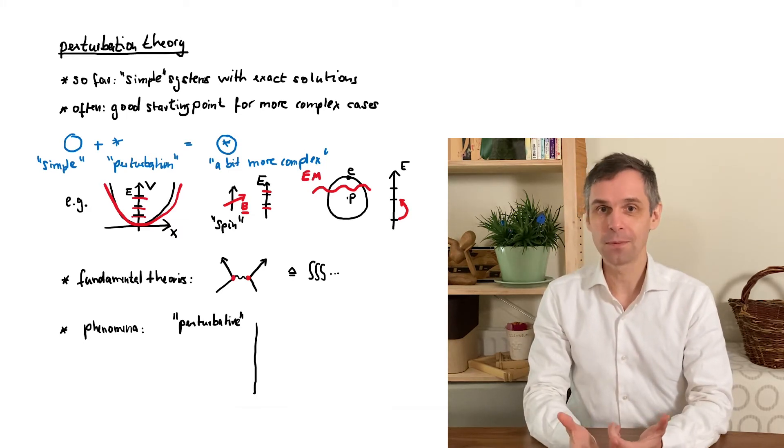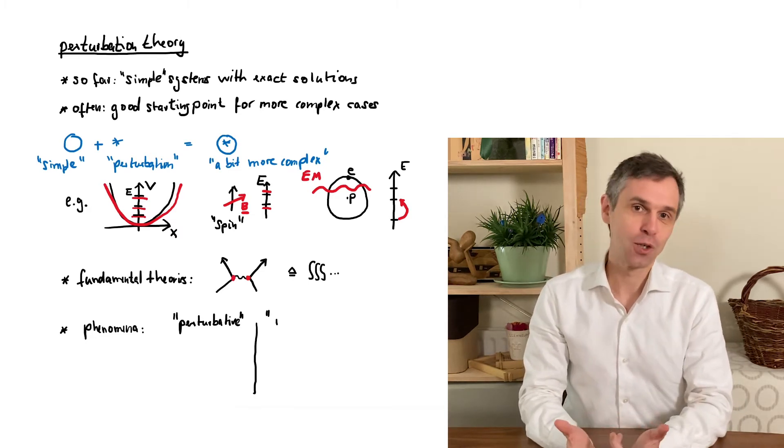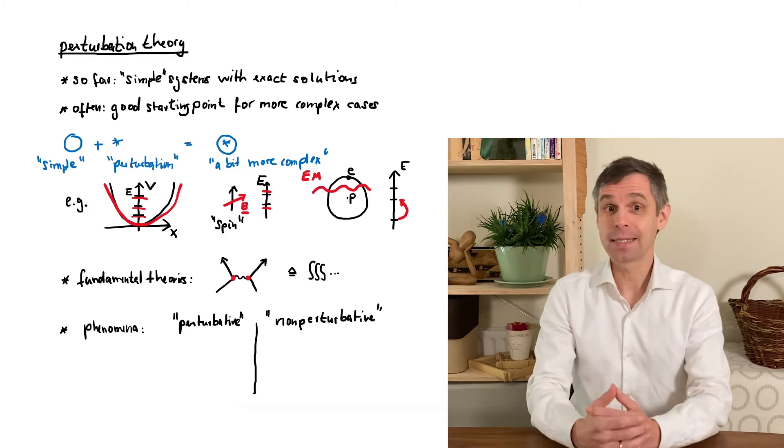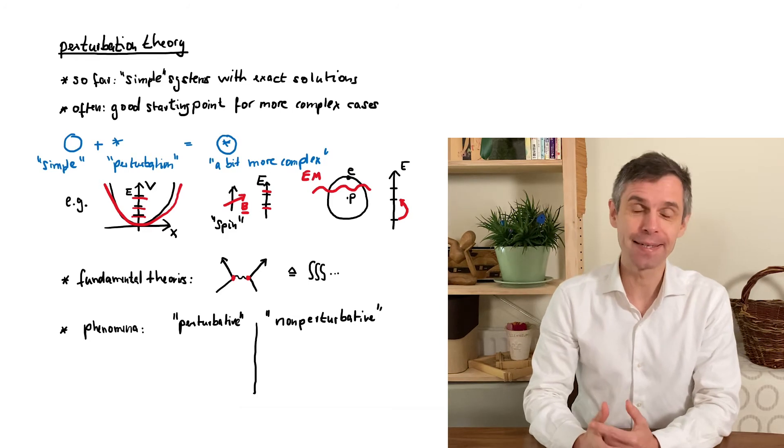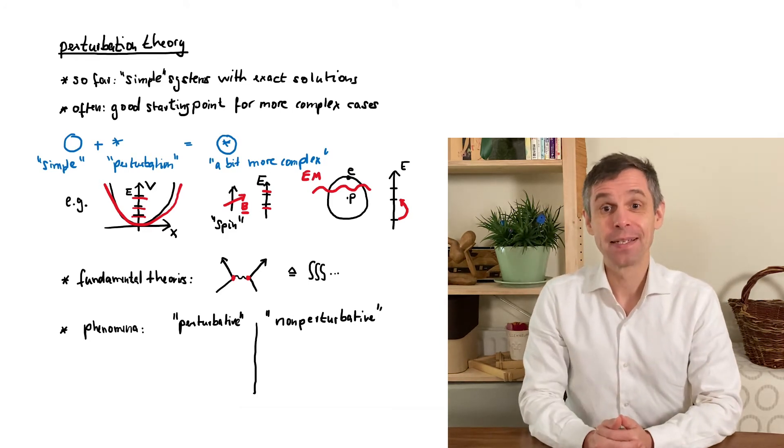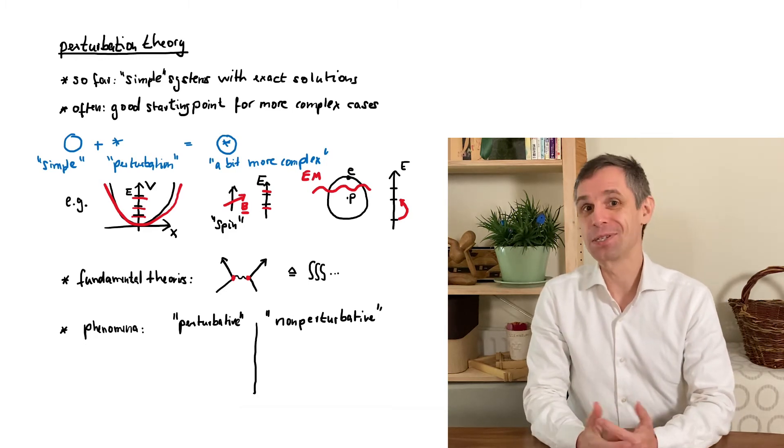On the other side you have phenomena where quantum systems completely change their behavior and these are known as non-perturbative. The formation of localized states in a random potential that I briefly mentioned in our discussion of bound states and extended states is one such example. This can occur say again for electrons in a semiconductor, but now in presence of impurities.